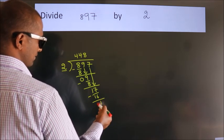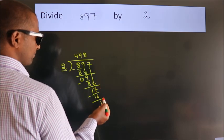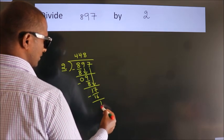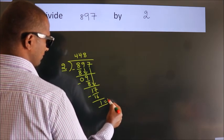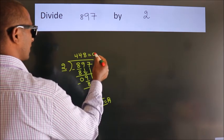After this, no more numbers to bring it down. So we stop here. This is our remainder. This is our quotient.